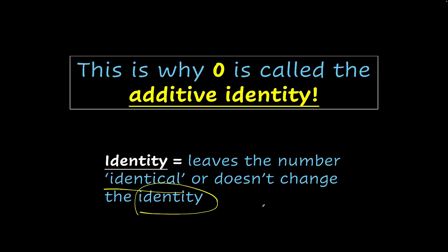It is actually related to the number that it is affecting rather than 0 itself. Additive identity 0 doesn't change the identity of the number it is added to.